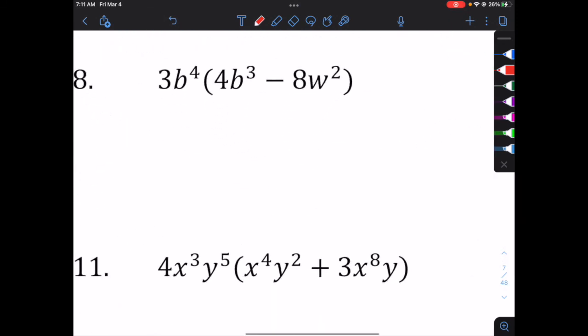Oh, no, there's a subtraction. It's not scary. We're going to take the monomial up front, multiply it by the first term of the binomial, 3 times 4. Those are our coefficients. That gives us 12. b to the fourth and b to the third. We add those exponents. b to the seventh.